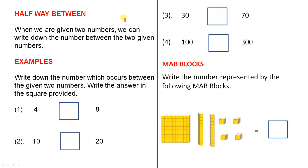Halfway between. When we are given two numbers, we can write down the number between the two given numbers. Let's look at some examples. Write down the number which occurs between the given two numbers. Write the answer in the square provided.